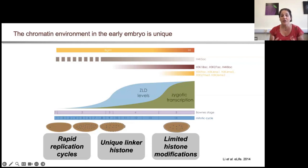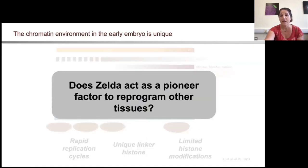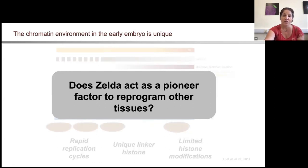One of the questions we had was: is this reprogramming by the pioneer factor Zelda unique to this time in development because of this distinctive chromatin state? Or can Zelda act as a pioneer factor to reprogram in other tissues? So we looked at another tissue, collaborating with Cheng Yu Li's lab at the University of Michigan to look in the neural stem cells of the larval brain.